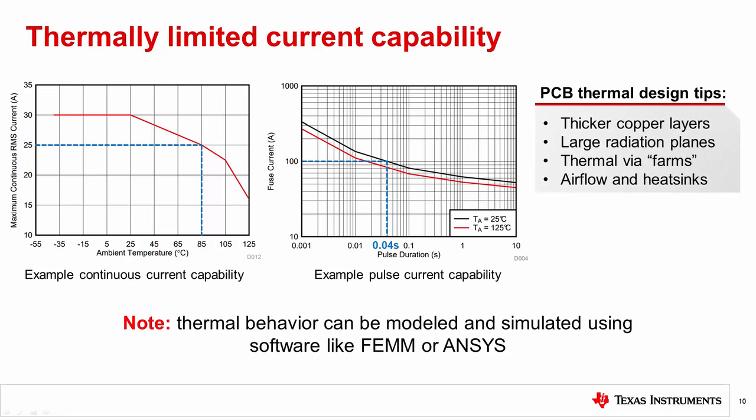To improve the thermal capability of your PCB, follow these tips. Use thicker copper board layers, such as 2-ounce or 3-ounce copper. Place large radiation traces on both the high-voltage and low-voltage sides. Add farms of large amounts of thermal vias near the device pins to improve energy transfer out of the IC and package. Add airflow and heat sinks to the system to help dissipate and remove more heat from the environment. Finally, note that thermal behavior can be modeled and simulated using software like FEM or ANSYS. While these tools can take time to learn, they can be invaluable in predicting and optimizing your thermal designs.